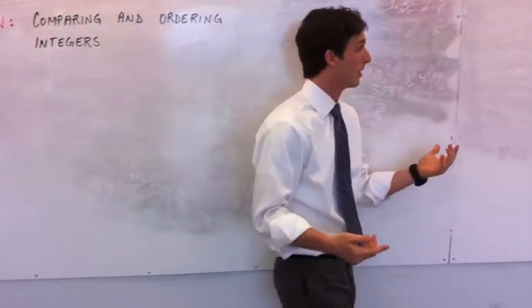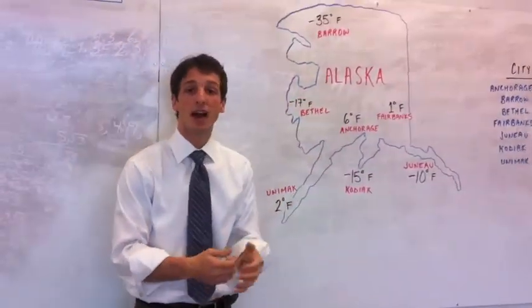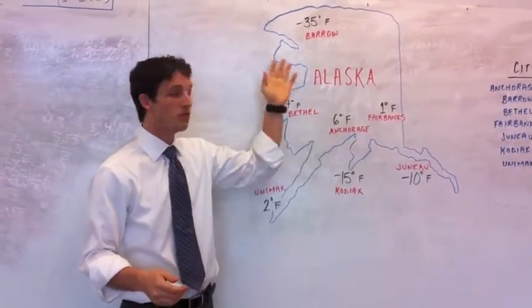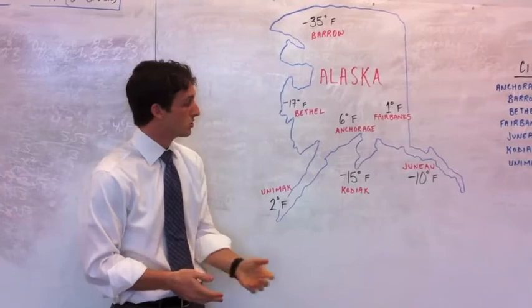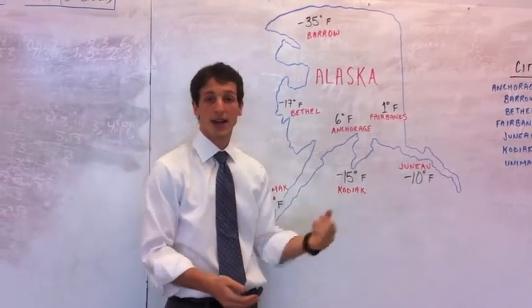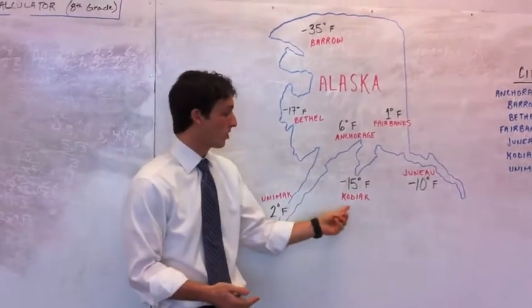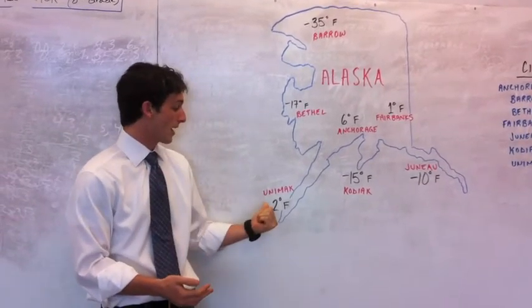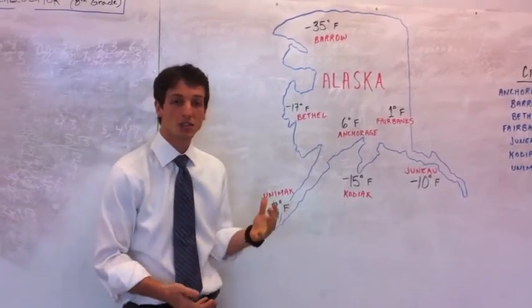Now what I have over here is a map of the state of Alaska and a few temperatures taken for a few cities within Alaska. So for example we have Juneau at 10 degrees Fahrenheit, Kodiak Island at negative 15 degrees Fahrenheit, Unamak at 2 degrees Fahrenheit, and so on.